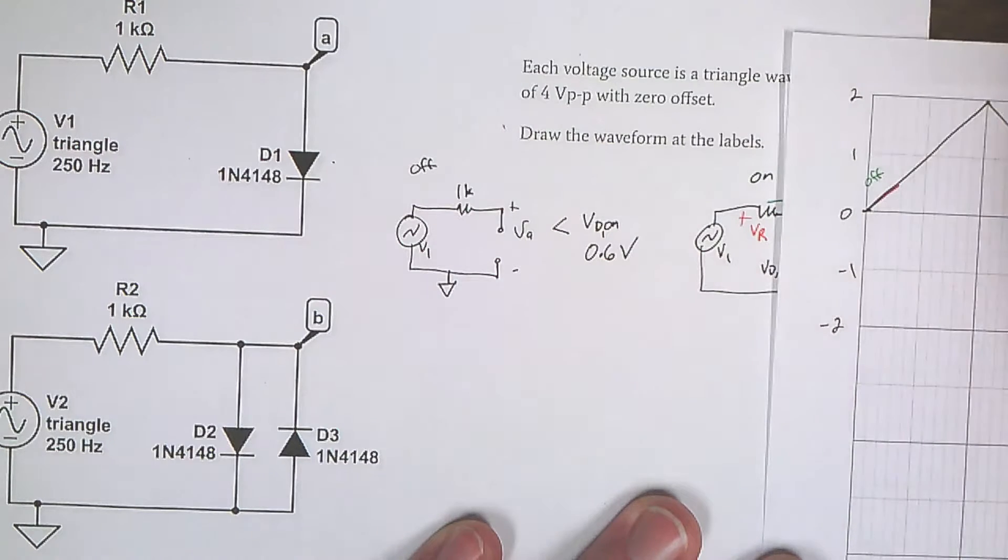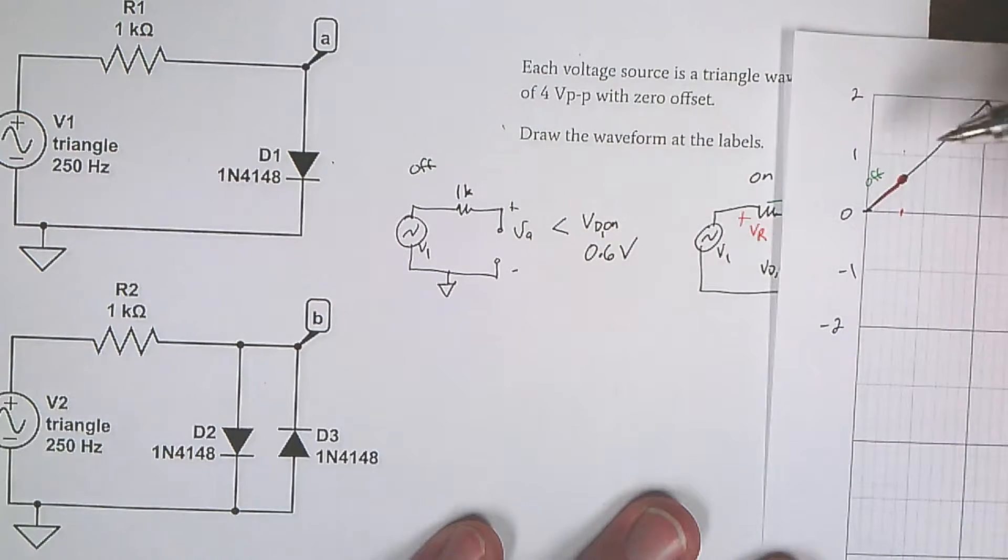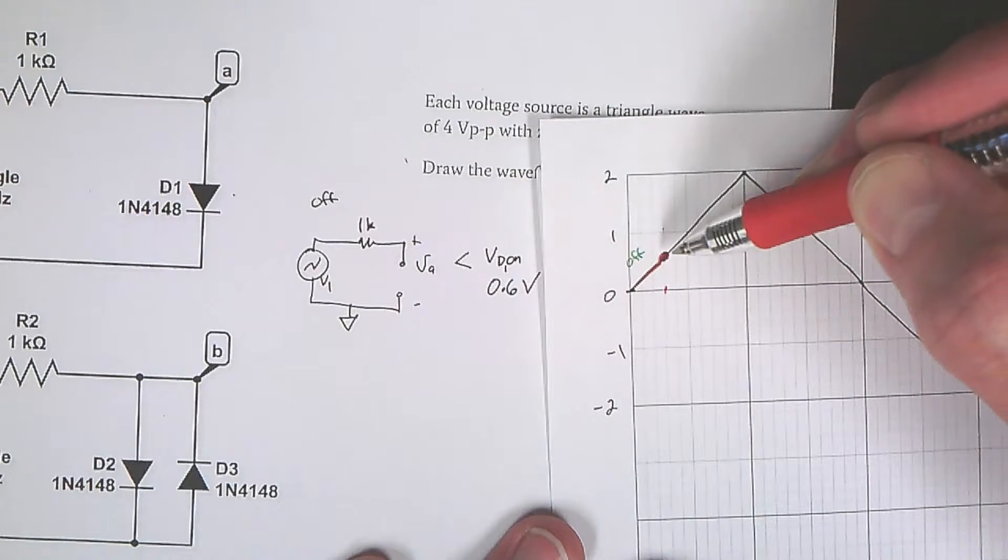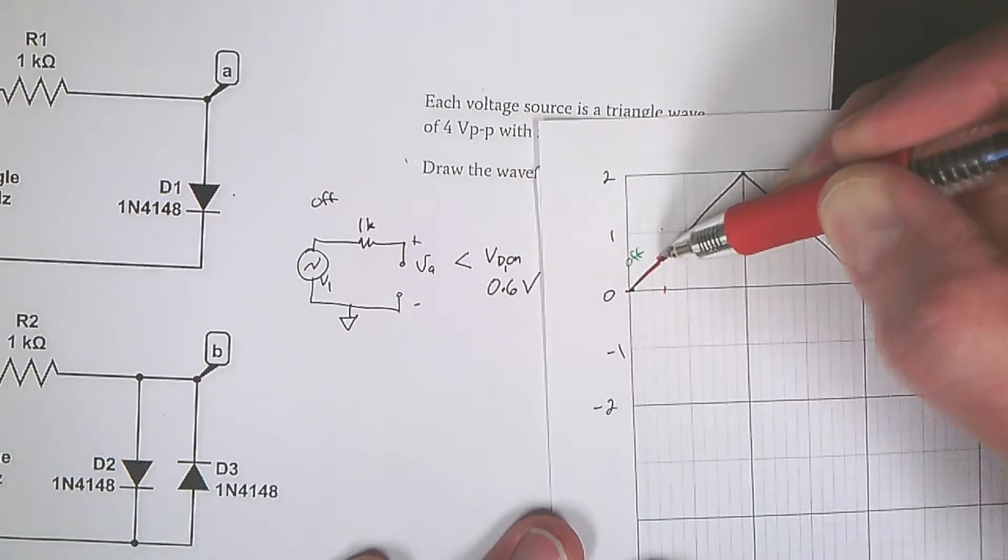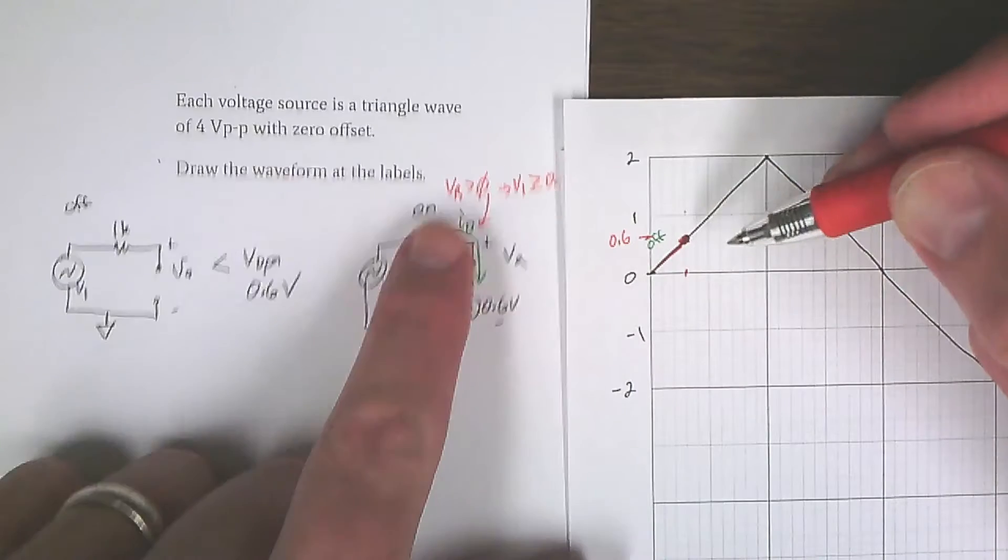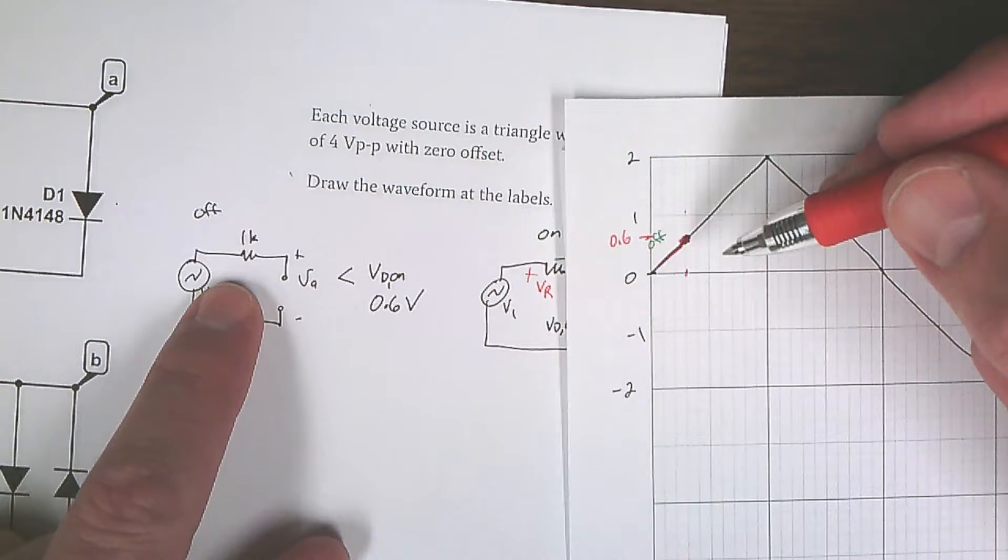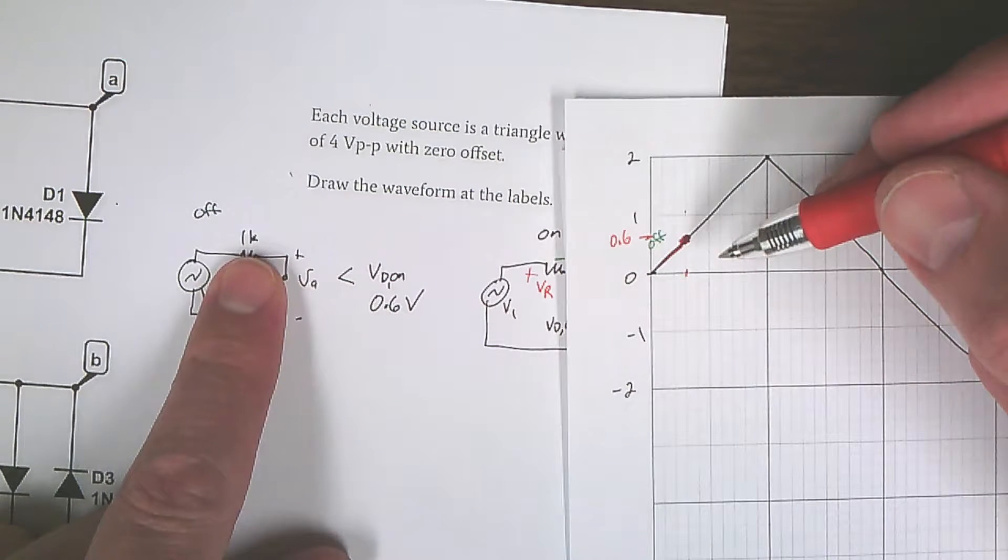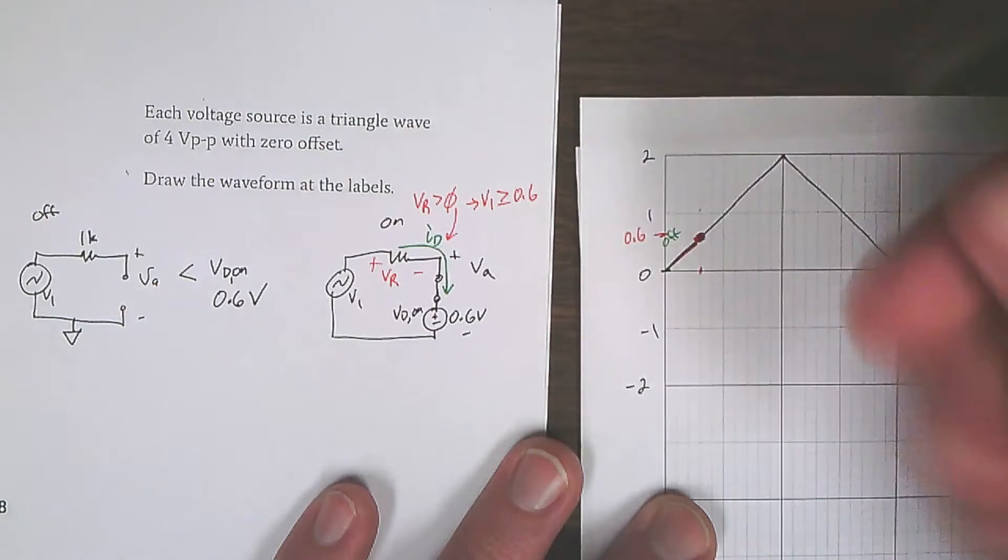So our waveform is going to trace up here until we hit 0.6 volts. This is 0.6 volts here on this plot. If we get larger than 0.6 volts, right there, this is 0.6 volts. Then our voltage across the resistor is going to be positive. We'll get a positive current. This va, if we keep it off, will be like 0.7 volts. So we can't use the off assumption. So we call the diode on. We switch to on, and there we go. So on.